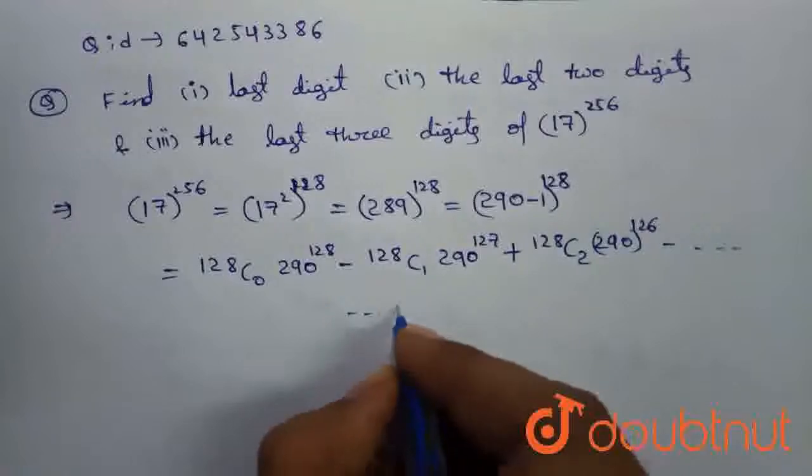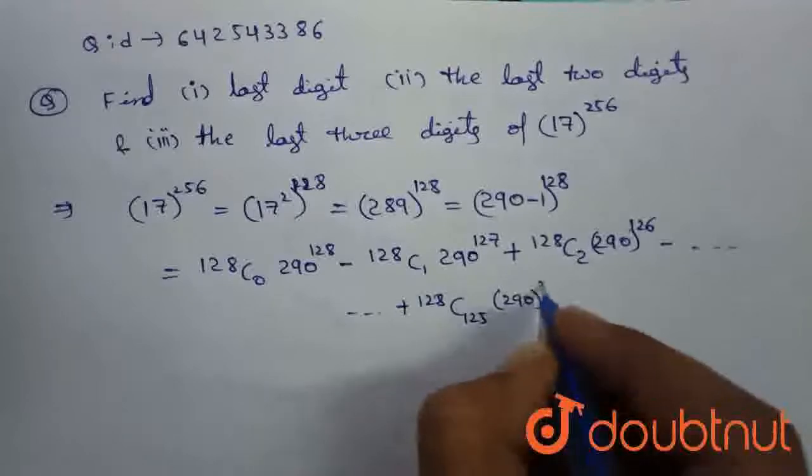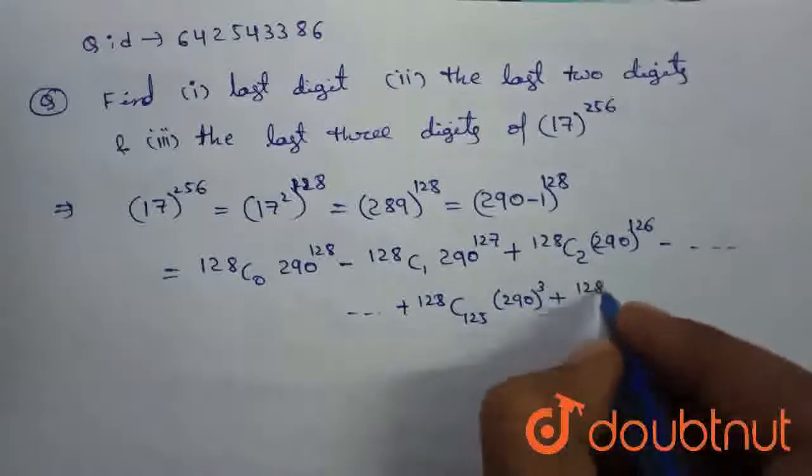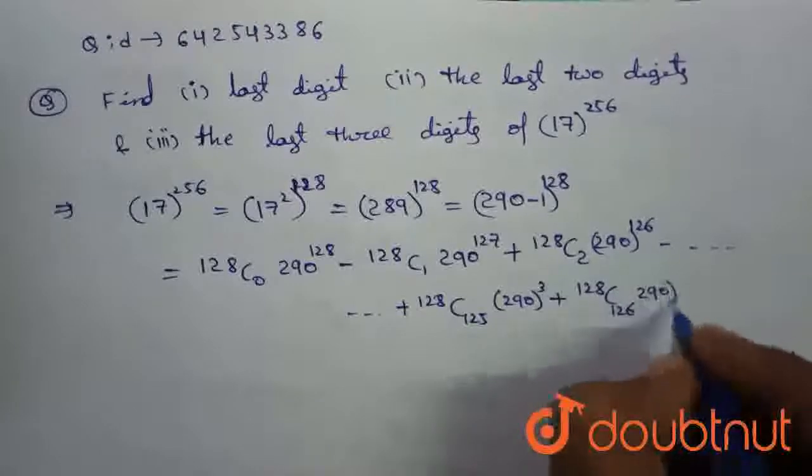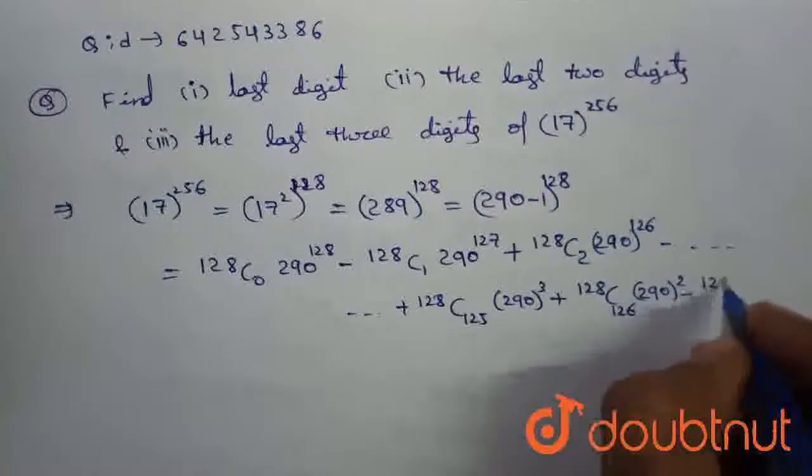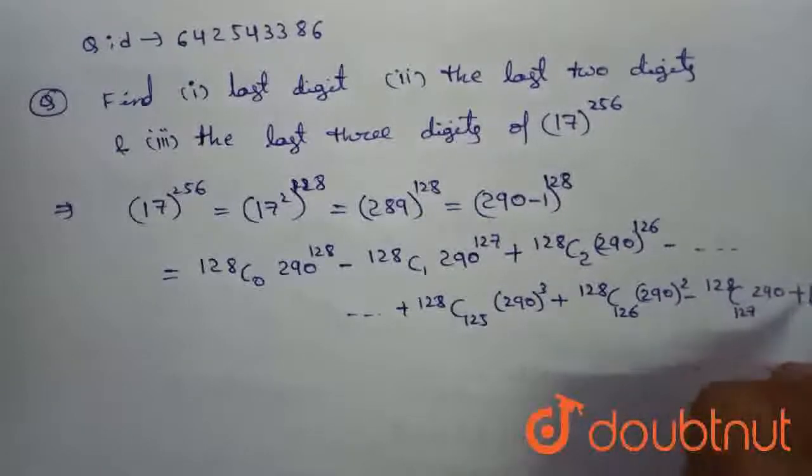plus 128 C1 290 cube plus 128 C126, 290 square minus 128 C127, 290 plus 1.